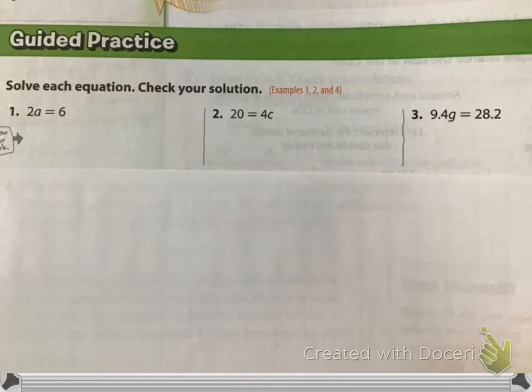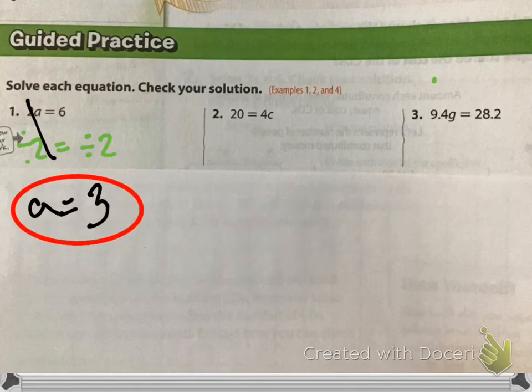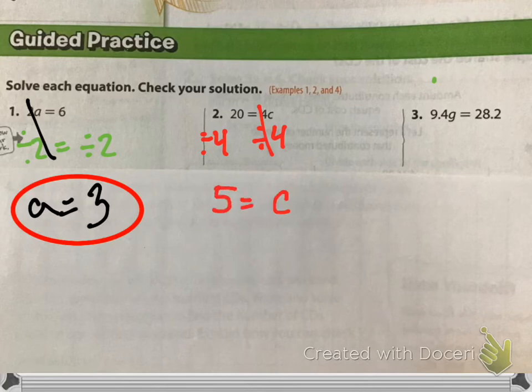For these first ones, it's pretty easy. We have 2A equals 6. As Raphael pointed out, for number one, it is 2A equals 6. We show our work by dividing. We basically are doing the opposite operation of whatever is happening to our unknown, whatever is happening to our variable. What operation is happening to our variable, Rocco? Multiplication. So, we do the opposite. We divide by 2 on each side. 2 divided by 2 is 1. It goes away. We get A. 6 divided by 2 is 3. So, then for the next one, we have 20 equals 4C. Am I going to be dividing the 20 or the 4, Diana? The 4 because it's on the same side as my variable.